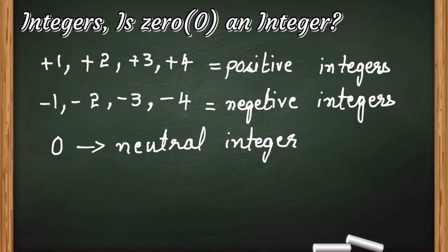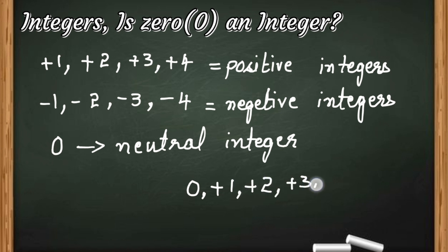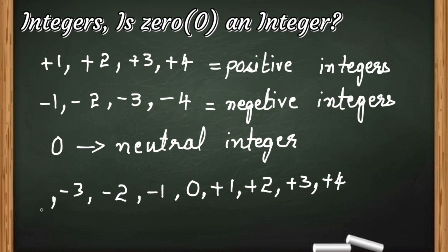So, 0 also comes under integers. Plus 1, plus 2, plus 3, plus 4 — all positive numbers are called as positive integers. Minus 1, minus 2, minus 3, minus 4 — all negative numbers are called as negative integers. And 0 is a neutral integer; it does not come under positive or negative, but it is also an integer, so it is called as neutral integer.